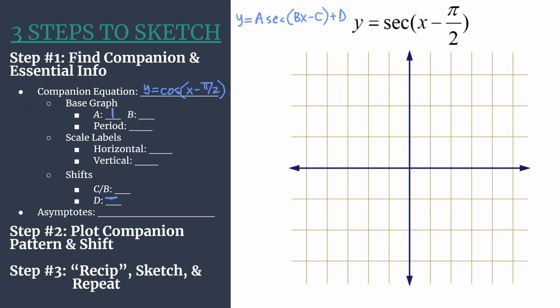B is the coefficient of X. That's another understood one. So we know we have one cycle of our graph that happens between zero and two pi. That's one thing B tells us. It also helps us calculate the period. And we do that using the formula two pi over B. That's easy enough here. It just simplifies to two pi. That's the length of one horizontal cycle.